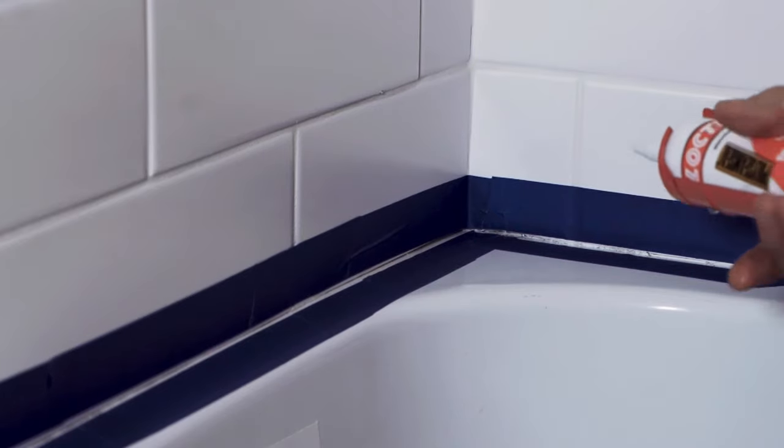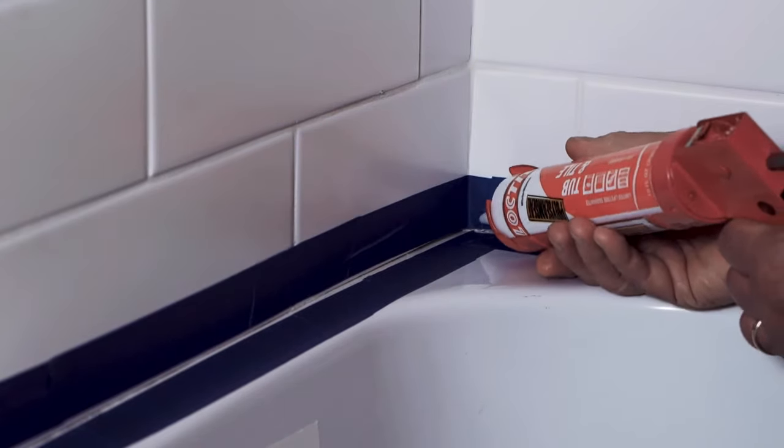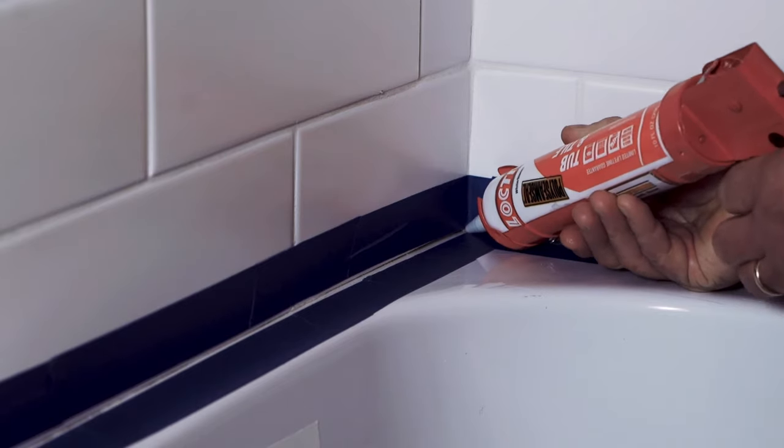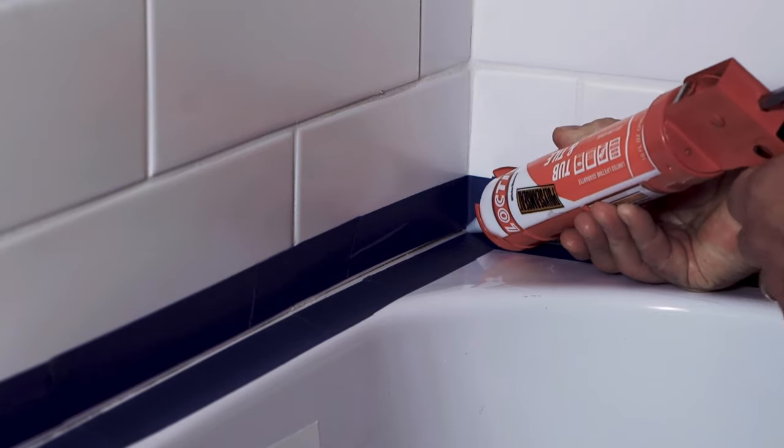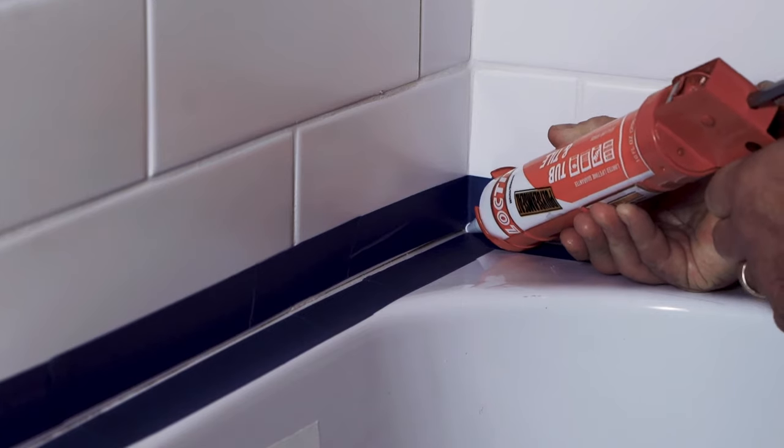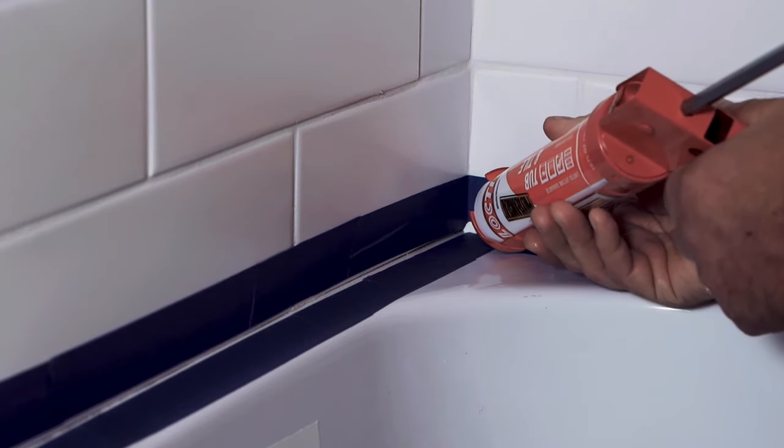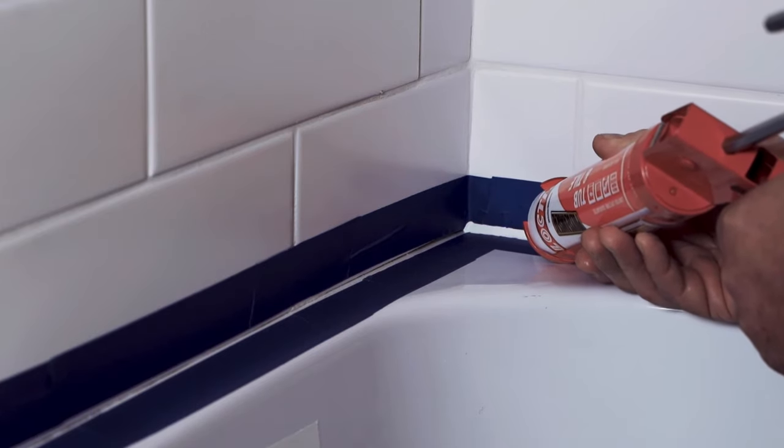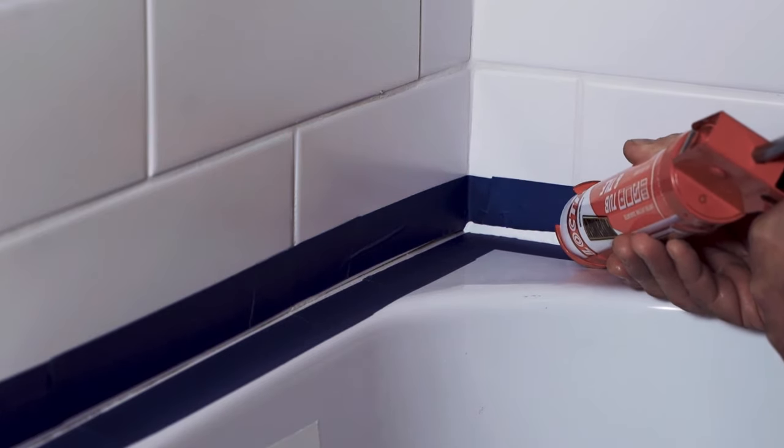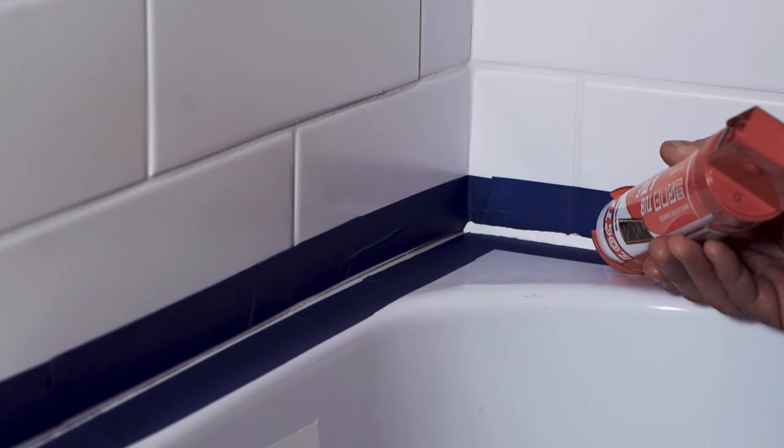So now that we've created that, you want to start with the caulking in a corner and start applying it. You don't want to over apply, but just start squeezing that in and watch what you're doing to fill that area with the caulking so that it spills a little bit onto the tape that you just applied.